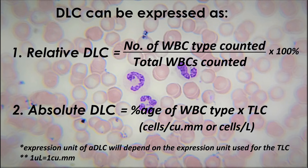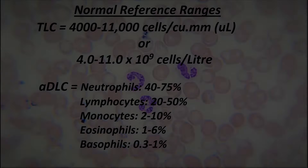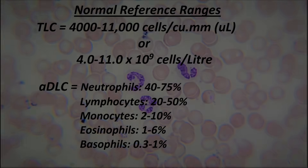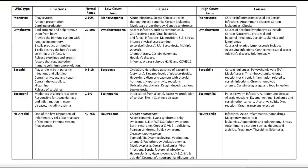The absolute DLC data is in fact a more useful and reliable information for diagnostic purposes. Do watch my video on how to perform a total leukocyte count by clicking on the link in the top right corner or the link in the description below. The normal reference ranges for TLC and DLC are as given here. Total leukocyte count in a human adult is around 4,000 to 11,000 cells per cubic millimeter or microliter. The normal ranges of each type of WBC, along with low and high counts and possible medical causes for abnormal counts, are summarized in the table shown on screen.